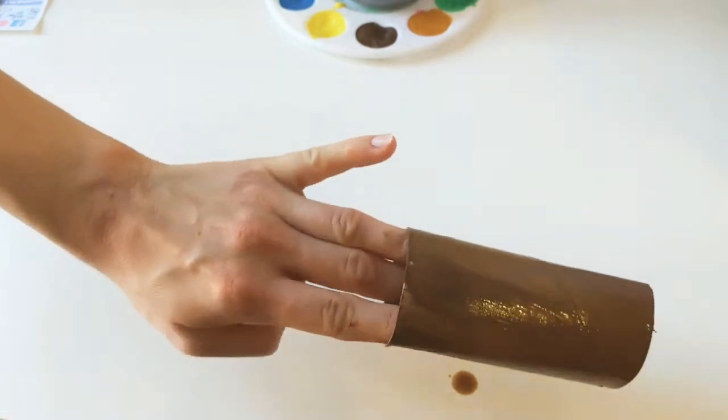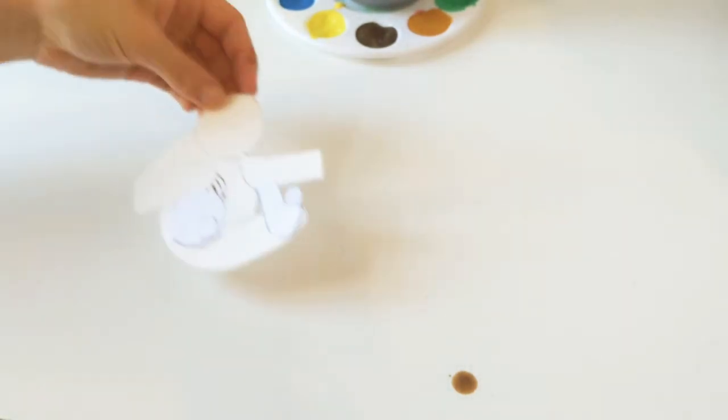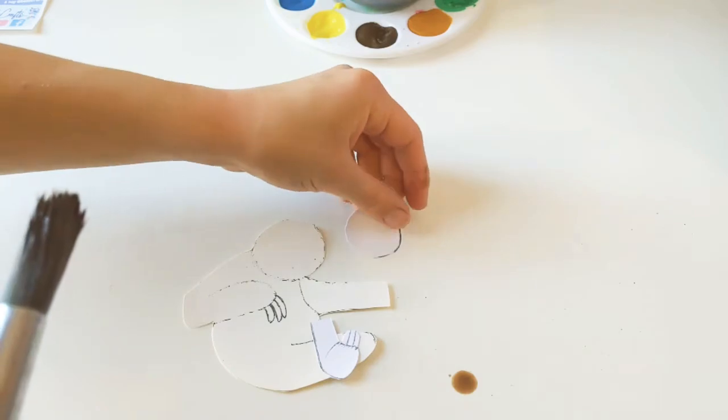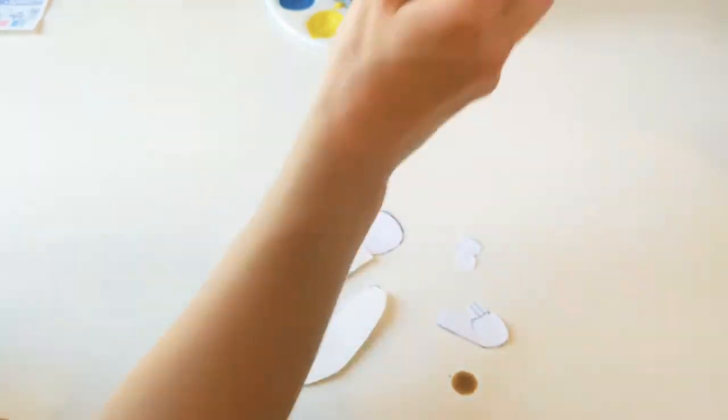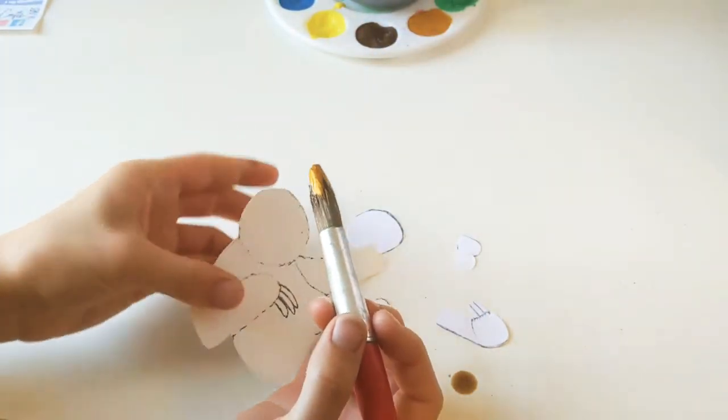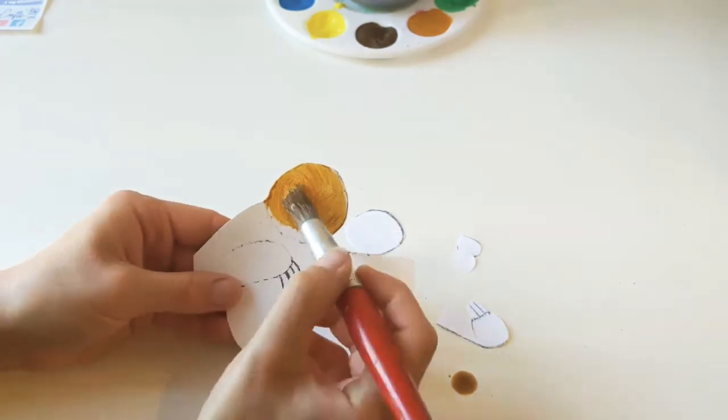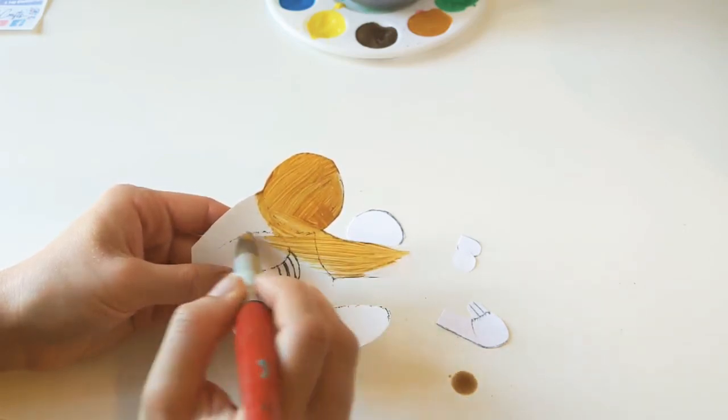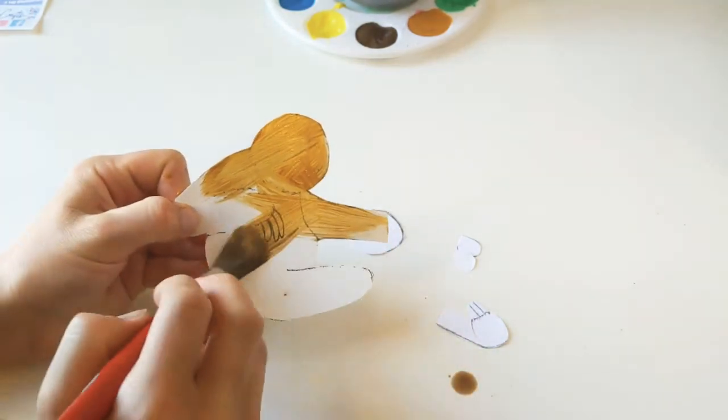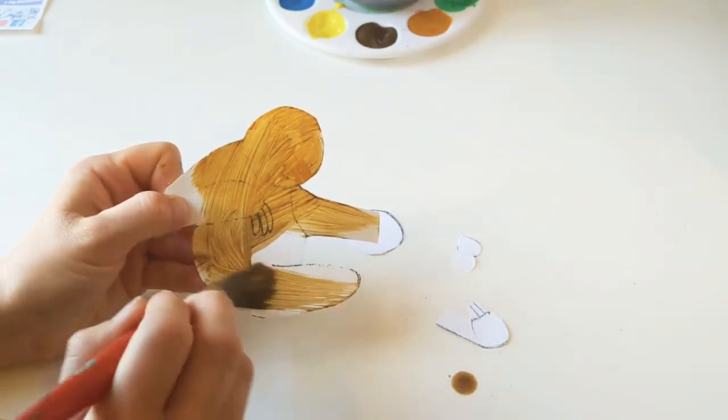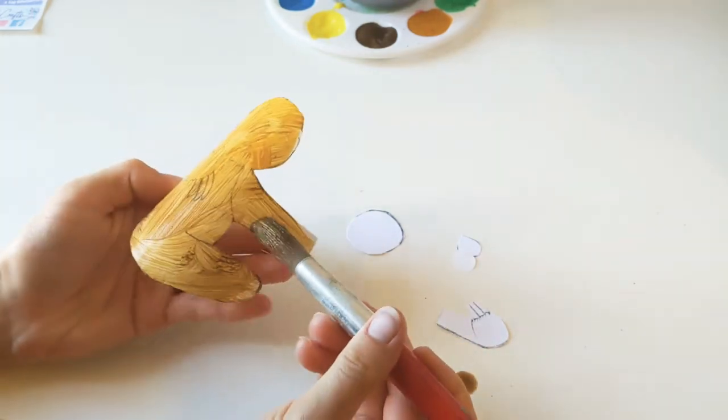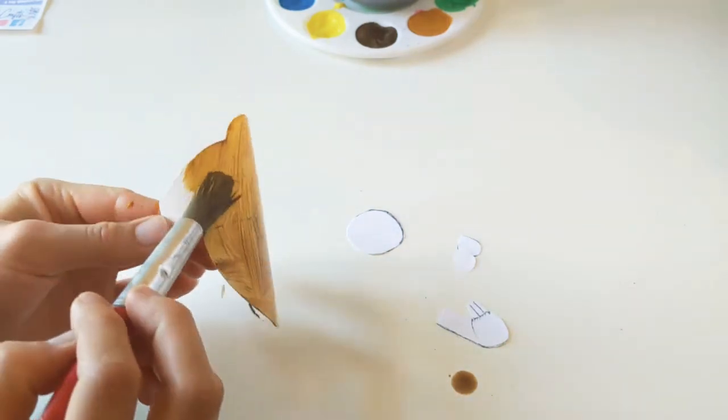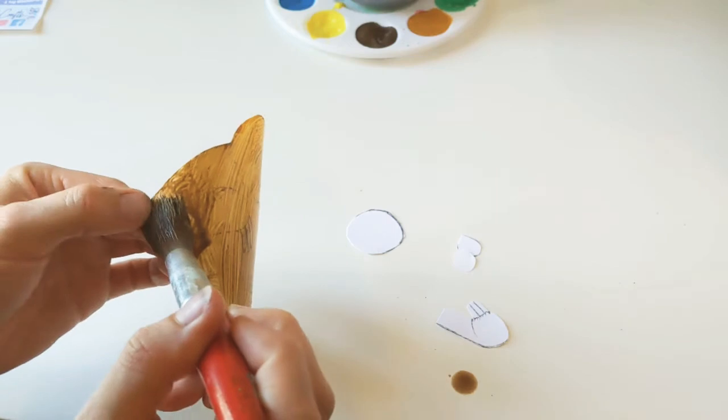There we go, there's our tree piece all painted so I'm going to put that bit to one side and I'm going to find my little sloth pieces and we're going to paint these ones too. Now I've still got some brown paint on my brush so I'm not going to wash it but I'm just going to dip it straight into the gold paint because I want my sloth to be a kind of goldy brown color. I'm just going to paint all over my little sloth.